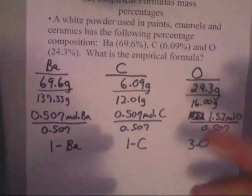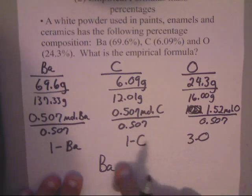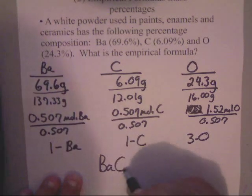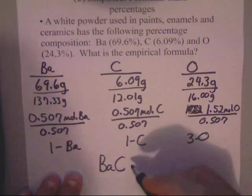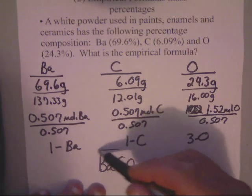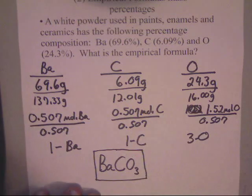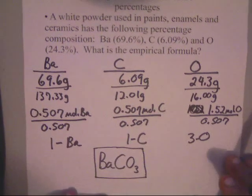So, anyway, we need to write the formula now. So, the empirical formula is Ba1, carbon 1, O 3. Hey, we know this formula. This is what? Barium carbonate. That's its empirical formula.